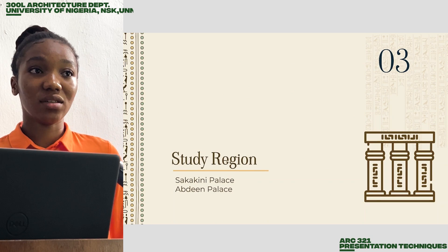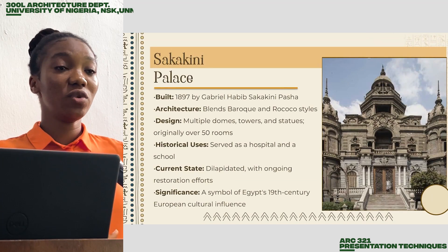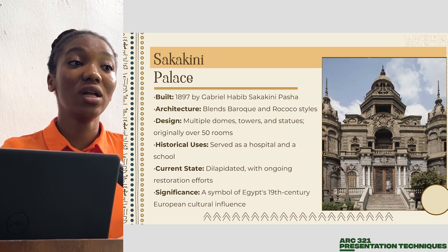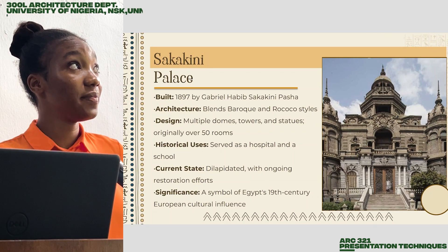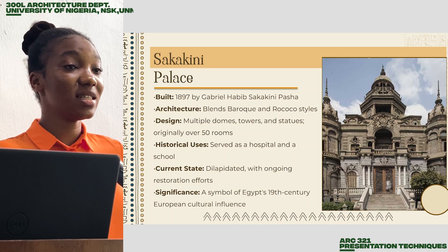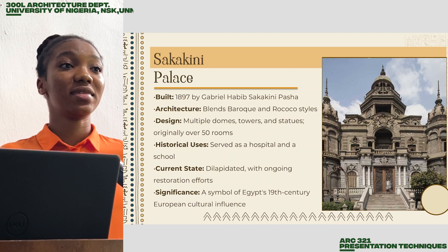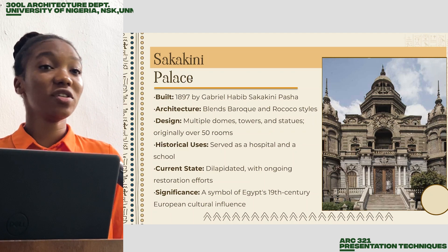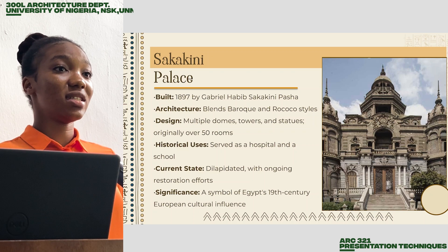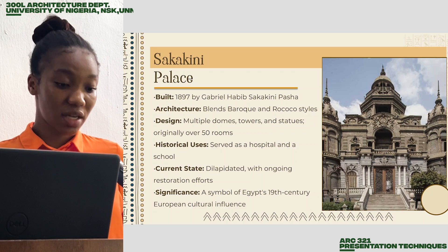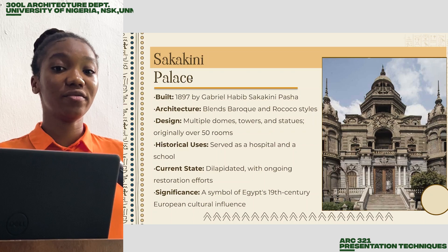For our case studies, we have two. The first is the Sakakini Palace, which was built in 1897 by Gabriel Habib Sakakini. This palace is significant because it is a symbol of Egypt's 19th century cultural influence.